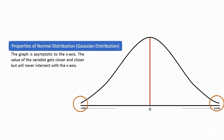Another property is that the graph is asymptotic to the x-axis. The value of the variable gets closer and closer but will never intersect with the x-axis. As x gets larger in a positive direction, the tail of the curve approaches but will never touch the horizontal axis. The same applies in the negative direction — the normal curve and the x-axis will never intersect.